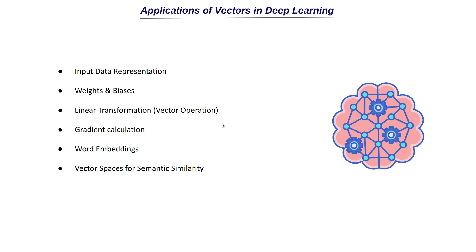Another application in deep learning is gradient calculation. We discussed back propagation in the first module — this algorithm is used in training neural networks and involves the computation of gradients. Gradients represent how the loss function changes when you change a parameter value. We always want to minimize the loss function, so we use the gradient to adjust the weight values. These gradients are basically vectors that indicate the direction in which each parameter should be adjusted — whether it should be increased or decreased.